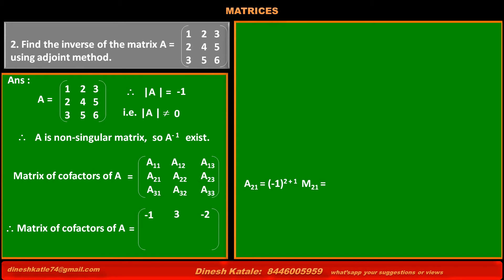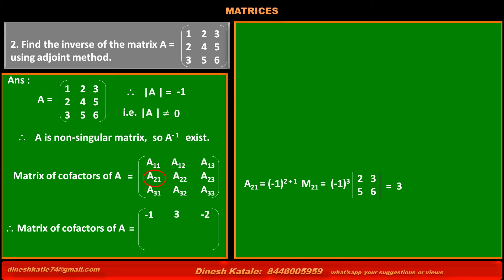Cofactor of element at second row, first column, A21 = (-1)^(2+1) × minor M21 = (-1)^3 × (2×6 - 3×5) = -1 × (12 - 15) = -1 × (-3) = +3. So the value of cofactor A21 is 3.